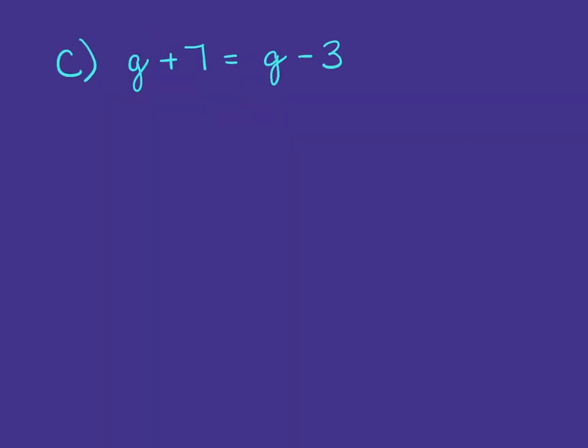Part C: G plus 7 equals G minus 3. So we have a variable on each side of the equation. So we're going to get rid of one of those. And notice that they are both the same.